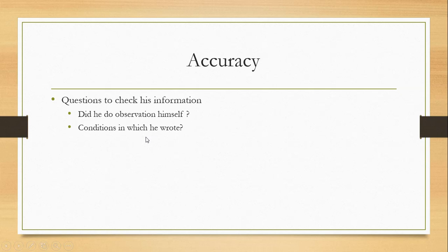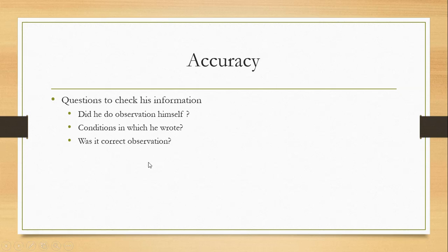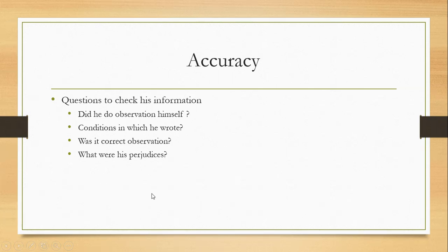The second question: what were the conditions when he wrote? Did he write out of fear or under pressure? For example, court historians like Abul Fazl or Barani — were they writing under conditions of fear, or were they fearless? The third question: was it a correct observation? Some authors habitually observe incorrectly. The fourth question: did the author have any prejudices — did he hate or love something? For instance, one author had prejudices against Akbar, so some of his wording was against Akbar, whether true or not.